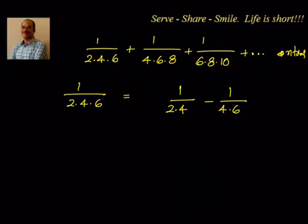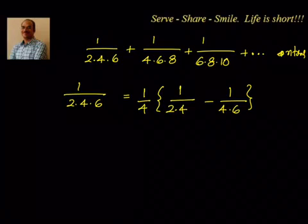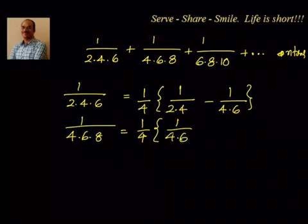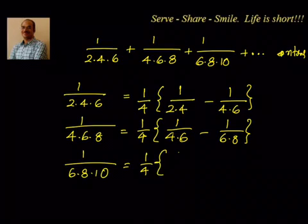The only question is whether I can write this directly or if a correction factor is needed. When I compute 1/(2·4) − 1/(4·6) and take the LCM, I get 6 − 2 = 4 in the numerator. So I need to divide by 4, meaning 1/(2·4·6) = (1/4)·[1/(2·4) − 1/(4·6)]. Similarly, 1/(4·6·8) = (1/4)·[1/(4·6) − 1/(6·8)], and 1/(6·8·10) = (1/4)·[1/(6·8) − 1/(8·10)].